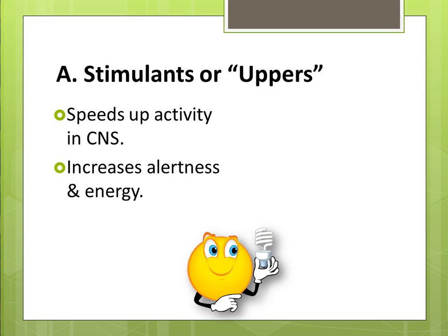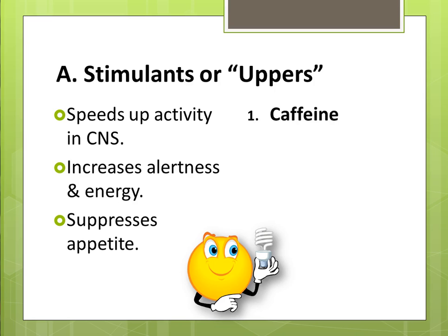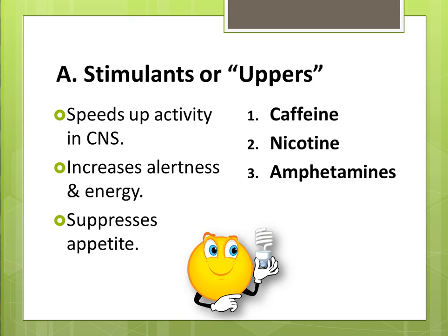At the same time, this increased energy often results in suppressing one's appetite. Caffeine is the most often used stimulant because it is found in food like coffee, tea, sodas, chocolate, and some over-the-counter drugs. If you've ever heard the complaint from former smokers about weight gain when they quit smoking, it is because nicotine suppresses appetite — thus, when they're no longer smoking, their appetite returns. Amphetamines are made in laboratories and are used as a main ingredient in diet pills, and also include methamphetamine, or meth, and crystal meth.